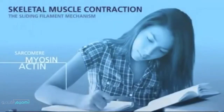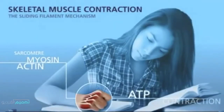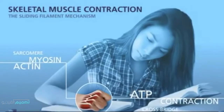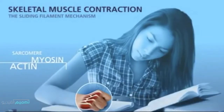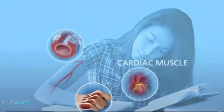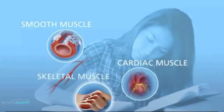You use muscles every day to do activities. This woman is using muscles to breathe, circulate blood, and move her hand to take notes. Your cardiac and smooth muscle tissues are involuntary — you do not consciously control their actions. Skeletal muscle works under voluntary control.